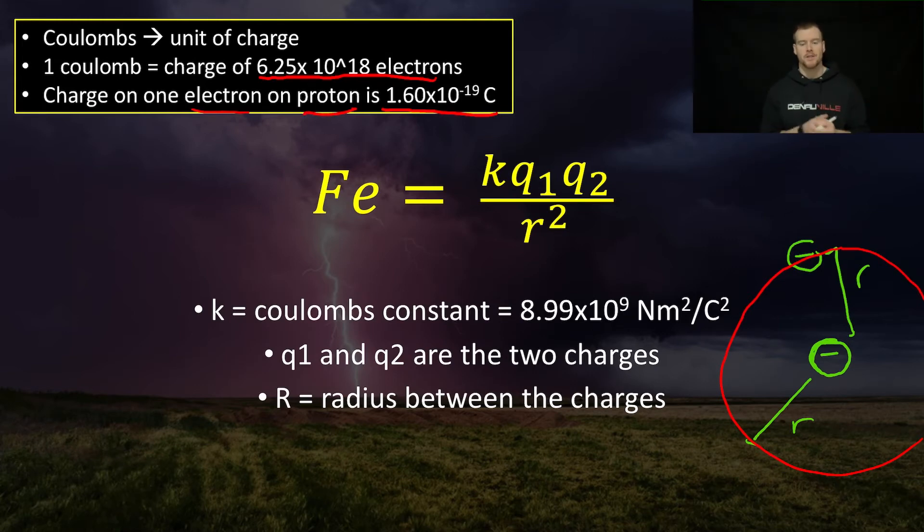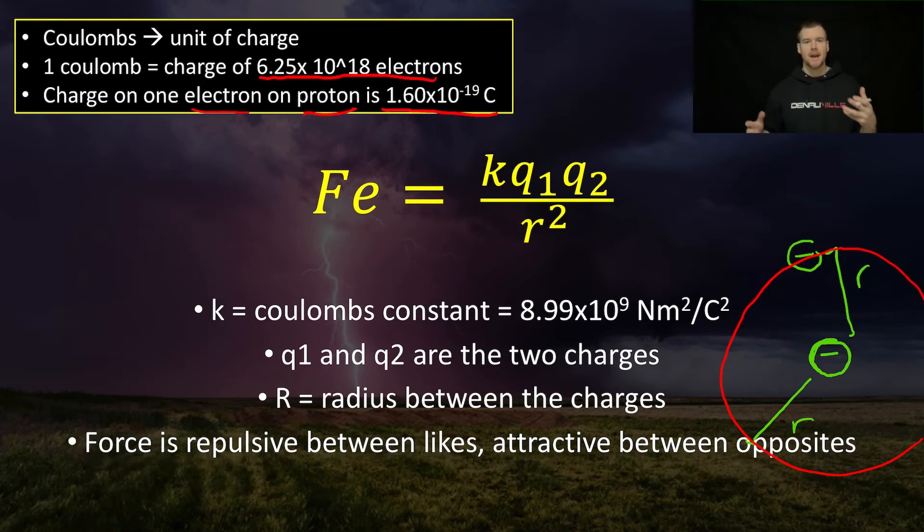Now, I did put electron and proton here because they each have the same amount of charge. It's just one's plus and one's minus. So a proton has positive 1.6 times 10 to the negative 19 Coulombs. And an electron has negative 1.6 times 10 to the negative 19 Coulombs. So this means that if we have a plus and a minus, there's going to be an attractive force that we're going to measure here. And if it's two same charges, two protons or two electrons, we're going to have a repulsive force.